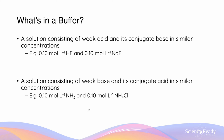Here we have an example of a solution that contains weak acid and its conjugate base in similar concentrations. We have 0.1 mol/L of HF and 0.1 mol/L of NaF, which is its conjugate base — this could be considered a buffer. Similarly, if we had 0.1 mol/L of ammonia and 0.1 mol/L of ammonium chloride, this could similarly be considered a buffer because it has a weak base and its conjugate acid.